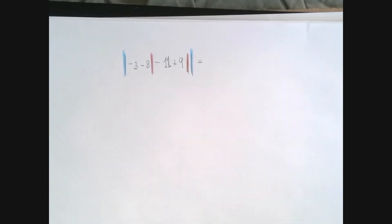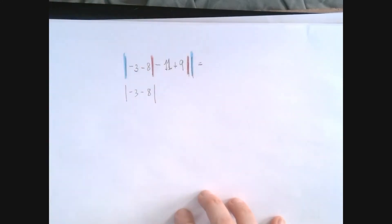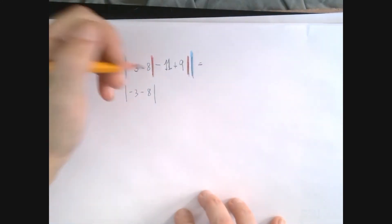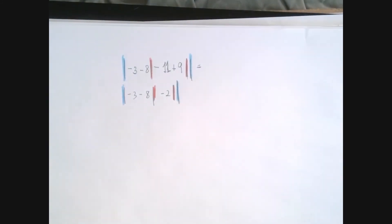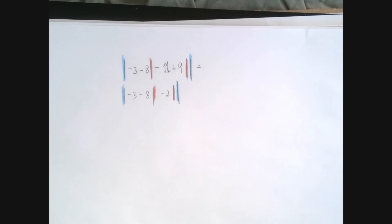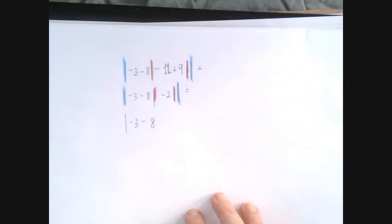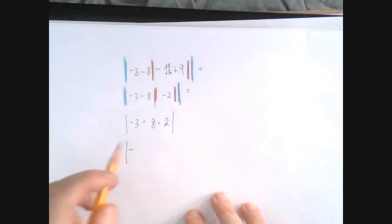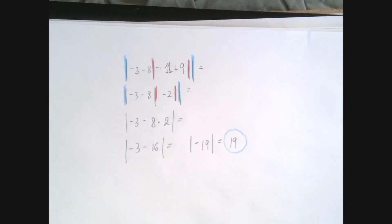We start by working in the innermost parentheses. Negative 11 plus 9 is negative 2. So now from negative 3 we subtract 8 times the absolute value of negative 2. The absolute value of negative 2 is 2. Now we do the multiplication, then the subtraction, and we have the absolute value of negative 19, which is 19.